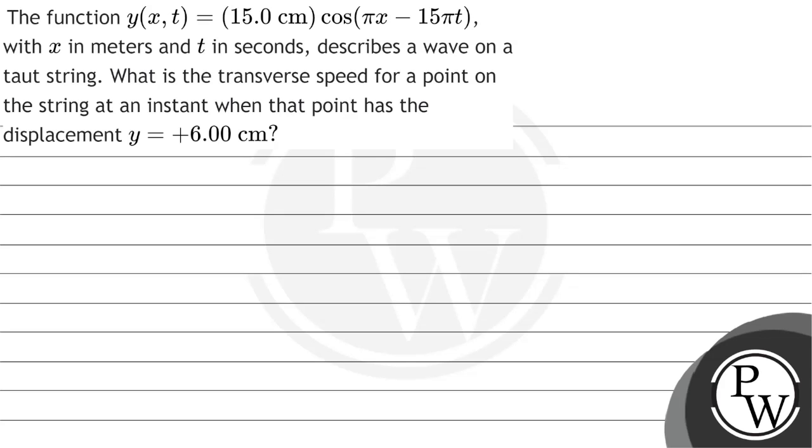Hello, let's read this question. The question says, the function y of x, t equals 15 cm cos(πx - 15πt), with x in meters and t in seconds, describes a wave on a taut string.